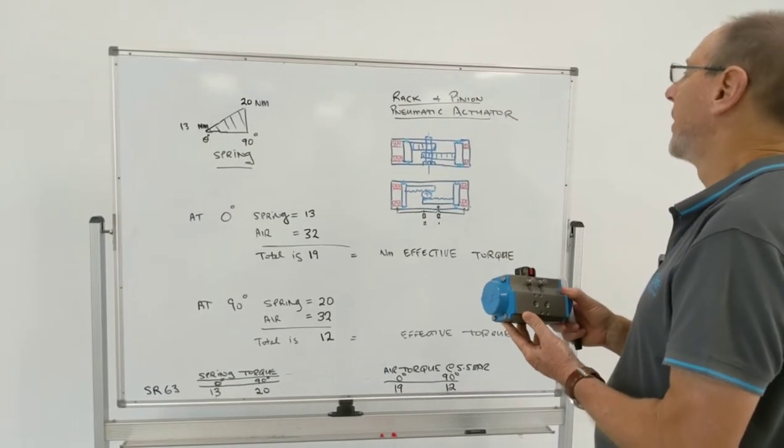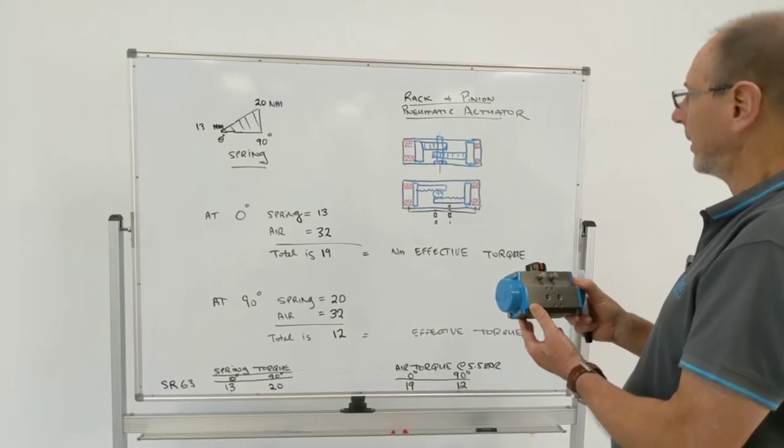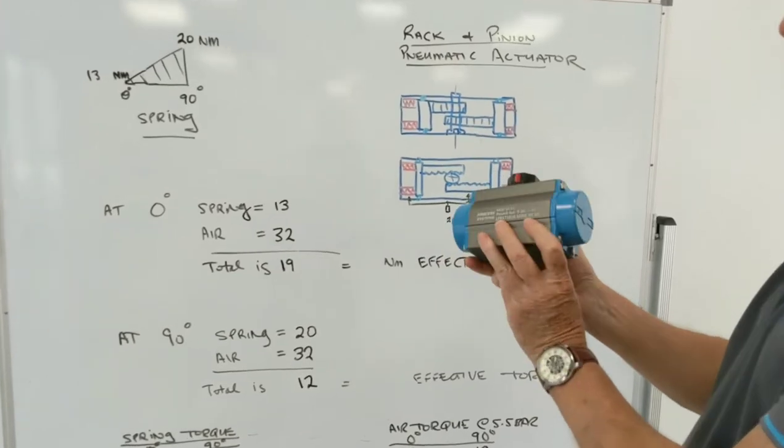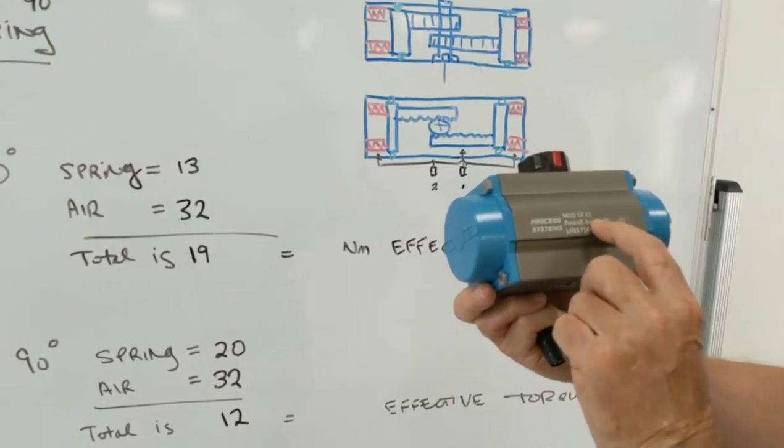Today we're talking about rack and pinion pneumatic actuators. This is an example here, it's SR63, one of ours. It's got SR63 on the back.